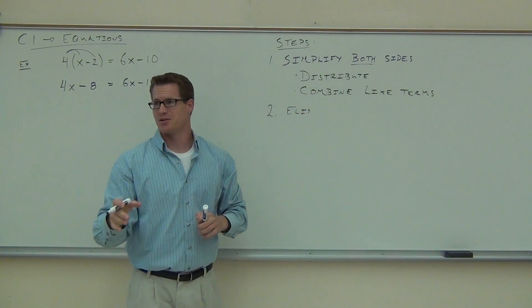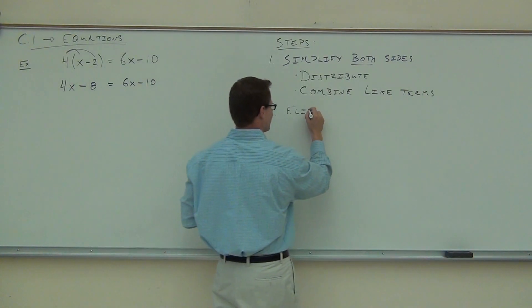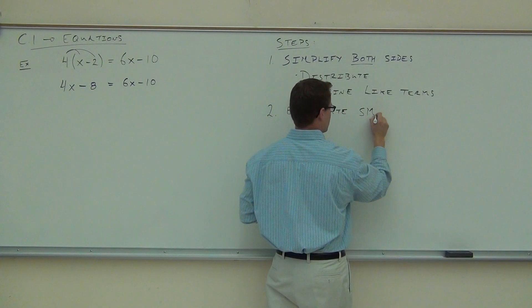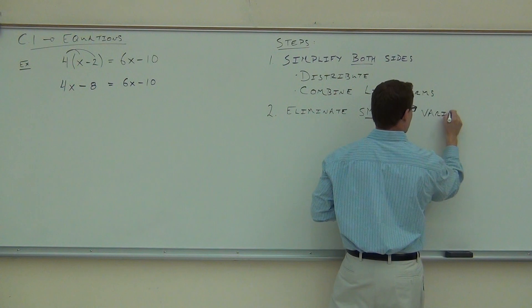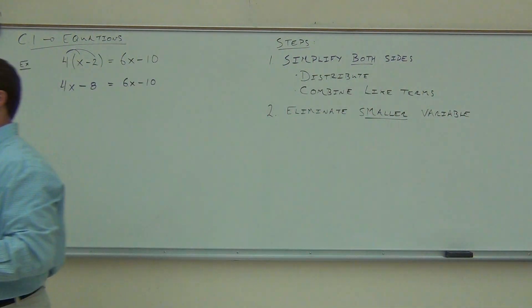So we're going to say eliminate. By the way, I'm not the best speller. If I make a mistake, don't hesitate, just let me know, okay? And if we do the smaller variable, if we eliminate that variable, we're always going to have a positive variable on the side. And that's kind of nice so we don't have to divide by negatives at the end. So here, we'll look at this. We've got our 4x, we have our 6x, we're going to identify the smaller one here. We're going to get rid of it by subtraction.